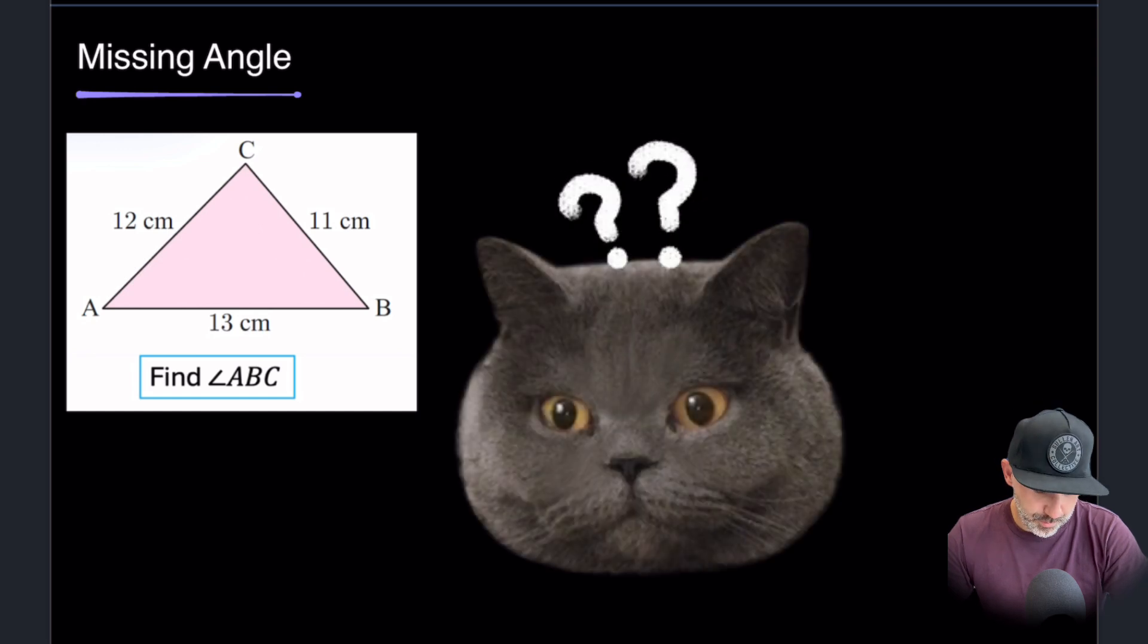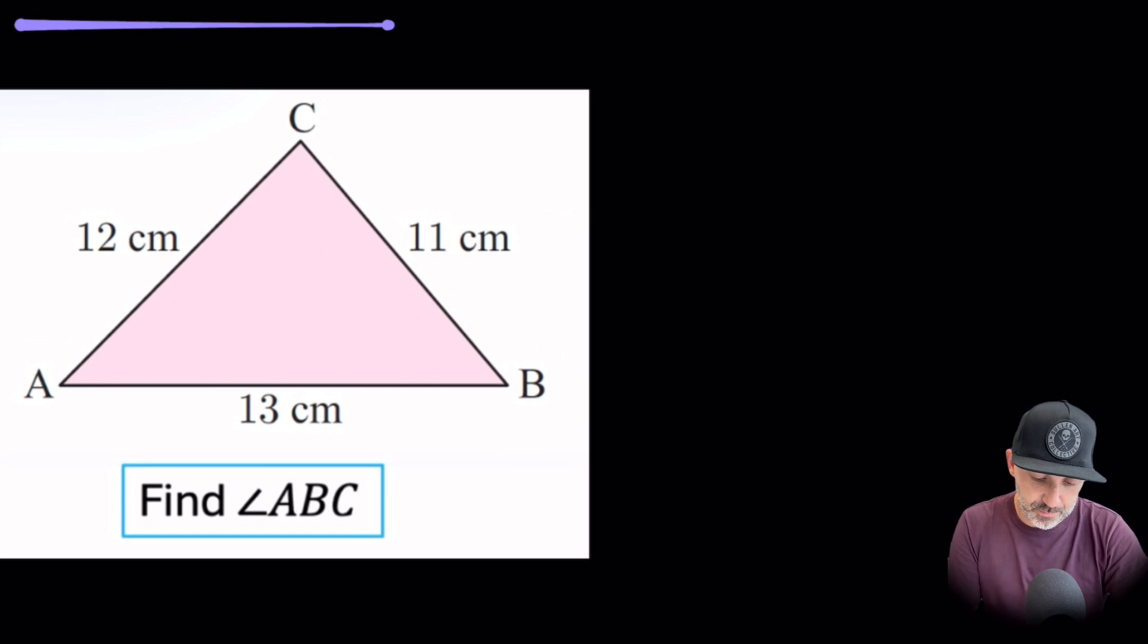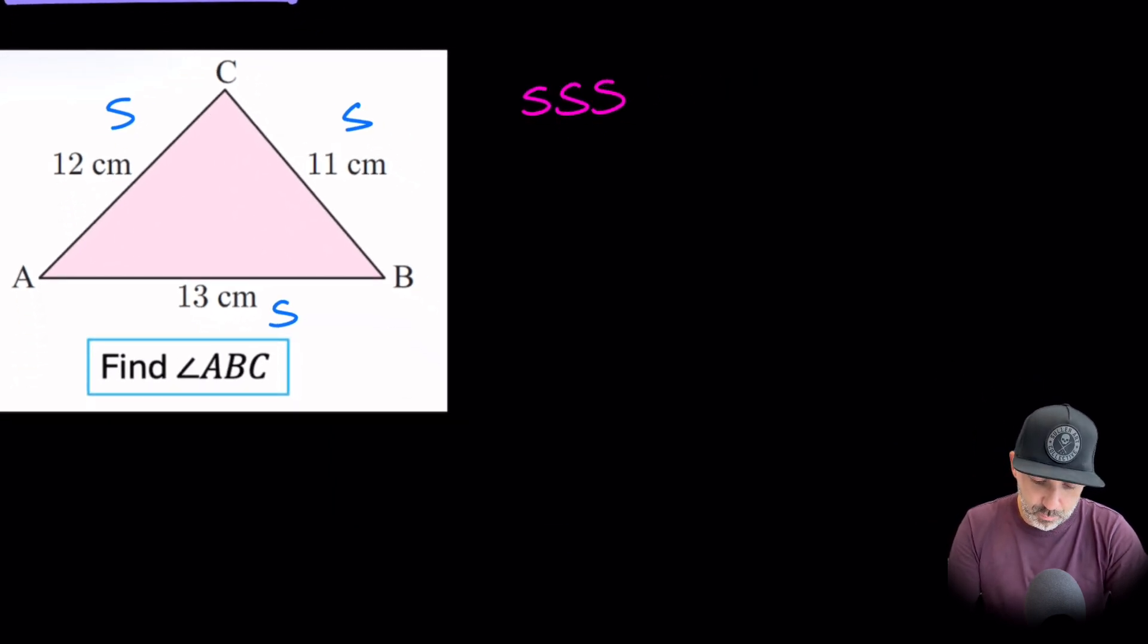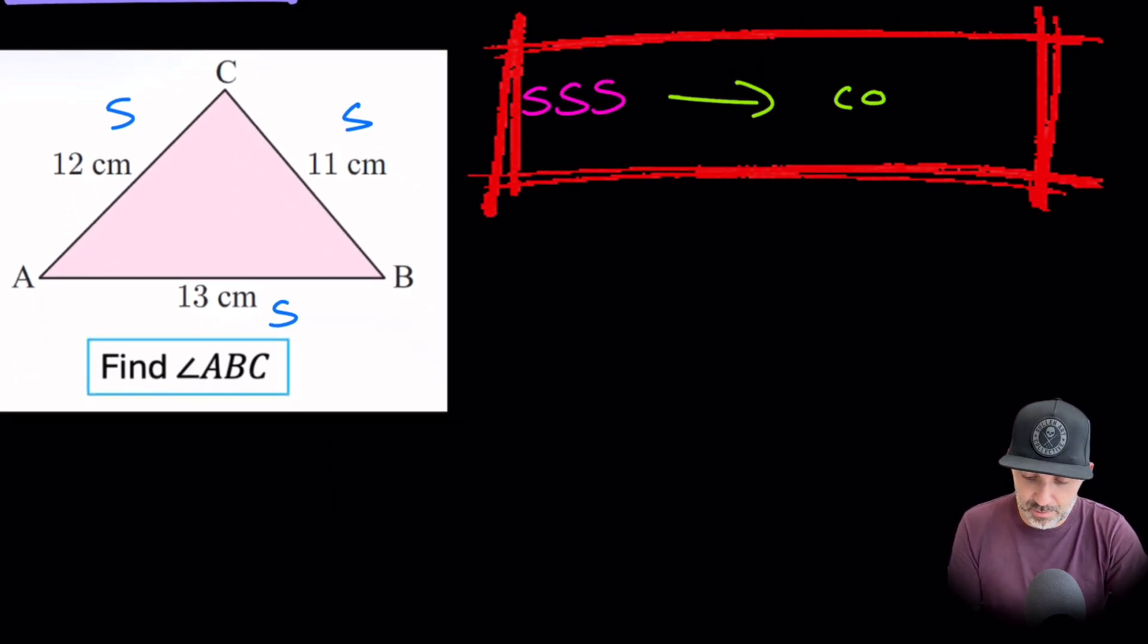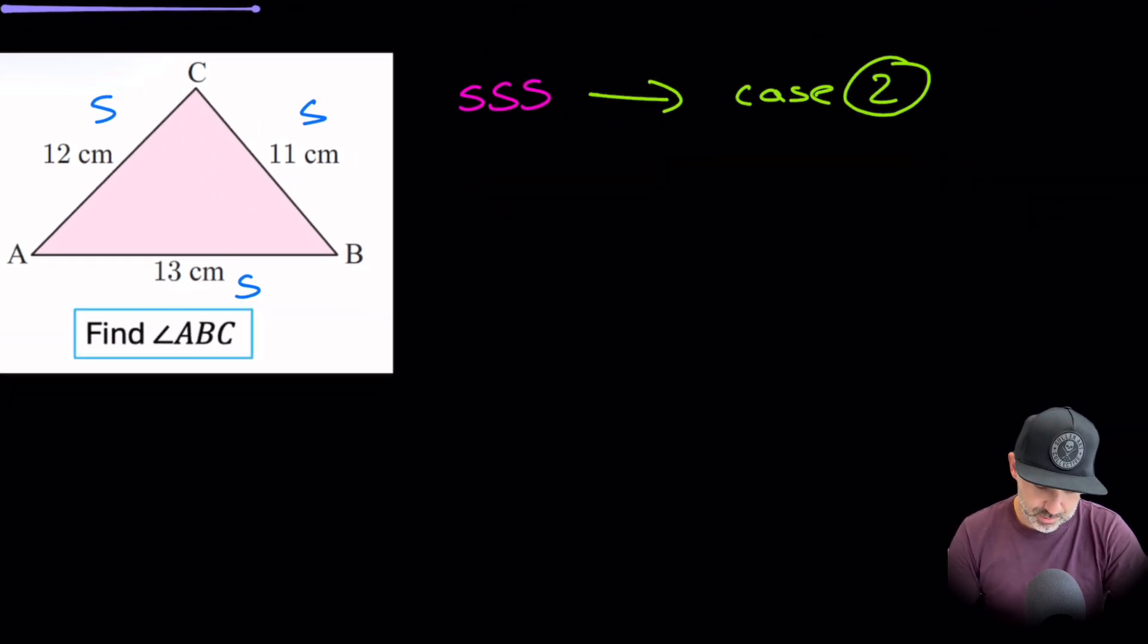In this problem here, it says there's a missing angle, but in the exam, it won't tell you that. What we're going to look at is what type of triangle we have here. We have a side, a side, and a side. So this would lead you to believe that it's a side, side, side problem. Therefore, we would be using case 2. And if you remember, case 2 was the one where we were finding an angle.